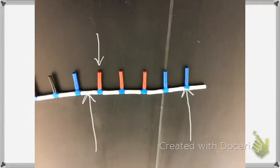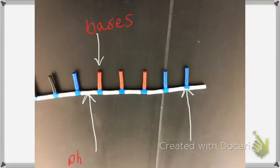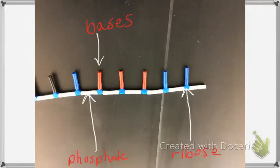This picture is RNA — how do you know? It's single-stranded. Looking at the parts: the colored tubes — blues, reds, blacks — are the bases. The white tubes are phosphate, just like before. The blue pentagons are ribose. This is RNA.